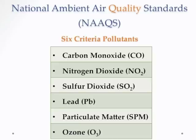The EPA enforces the Clean Air Act using six criteria pollutants: carbon monoxide, nitrogen dioxide, sulfur dioxide, lead, particulate matter, and ozone. It monitors the amount of each in the atmosphere through measuring stations at many places throughout the United States, mostly in bigger cities where pollution is expected to be more intense. There is a maximum pollutant level that's allowed, and when a location exceeds that level, it is said to be in noncompliance with the provisions of the Clean Air Act.